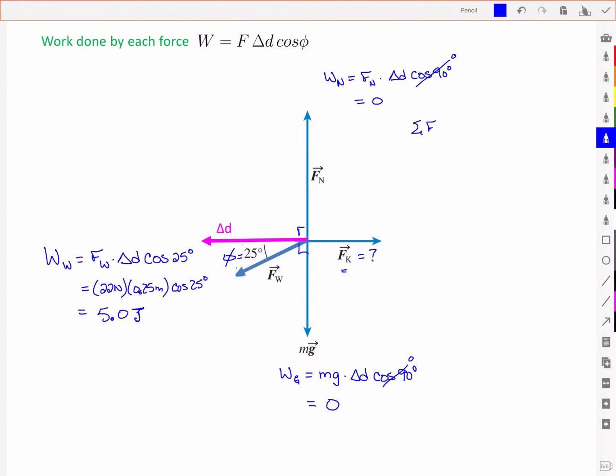And so if I look at the sum of my x components, I've got the kinetic force, and I've got the x component of the applied force. And so that's this force here, the x component. So this is going to be Fw cos of theta, pardon me, cos of phi, and that's all going to be equal to the net force providing an acceleration, which in this case the acceleration is zero, because I have no acceleration in the x direction. It's moving at a constant velocity.